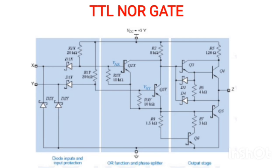Next, consider both inputs high: x=1, y=1. The output comes to 0. When both are 1, diodes D1x, D1y and D2x, D2y — all four diodes — come to reverse bias. Reverse bias means VCC goes to the base of Q2x and Q2y, so both will be on with 5 volts. The base of Q5 and Q6 also gets 5 volts from Q2x and Q2y, so Q5 and Q6 are also on. VCC goes directly to ground through Q2x to Q6, so the output becomes zero. The base of Q3 will be zero, so Q3 and Q4 will be off.